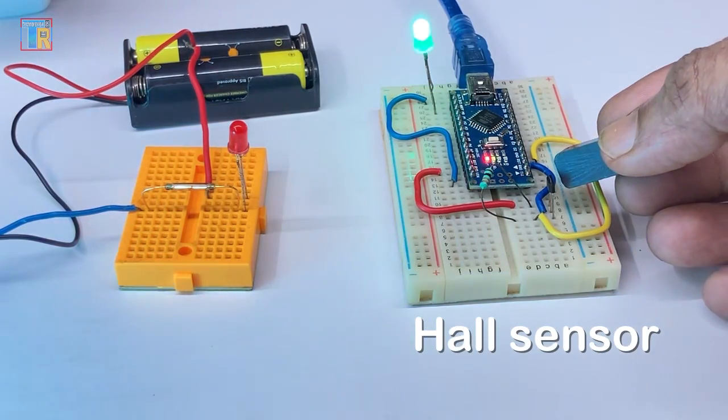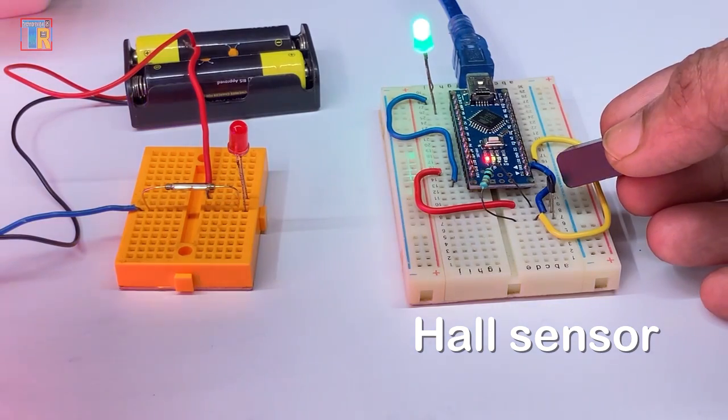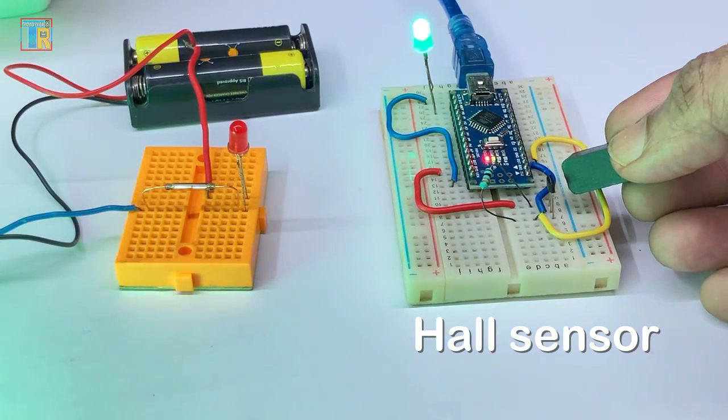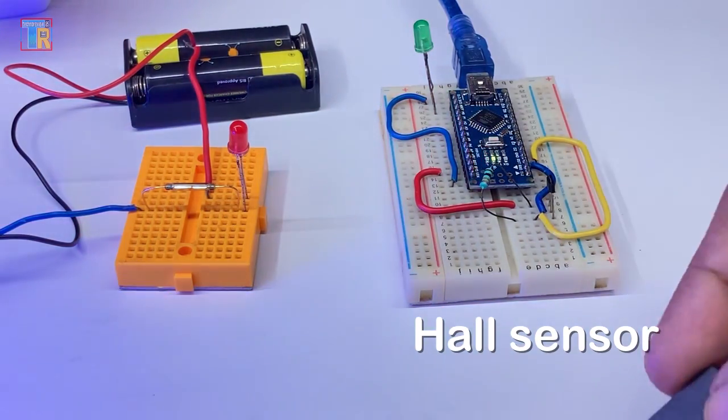Hall sensor: needs power but no moving parts, very reliable, can work on-off or even measure magnetic strength.